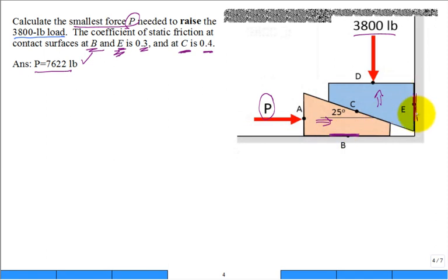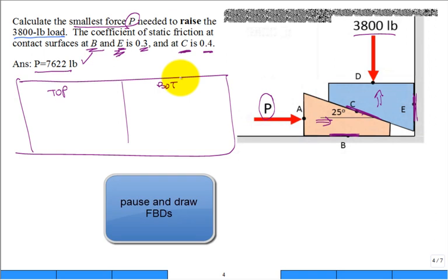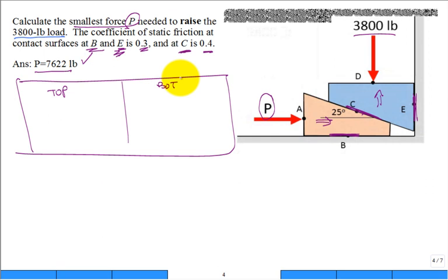Armed with that information, you now know how it's sliding at B, how it's sliding at E, and actually how it's sliding at C. Now you can get a free body diagram for the top wedge as well as the bottom wedge. On your sheet of paper, split it and put the top wedge and the bottom wedge free body diagrams.